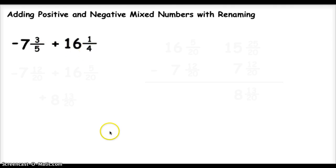Now whenever I add mixed numbers or fractions, I need to make sure that I get a common denominator. In this case, my least common multiple of 5 and 4 is 20, so my common denominator will be 20.